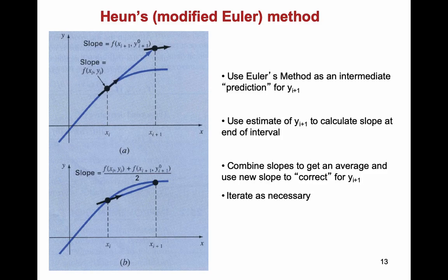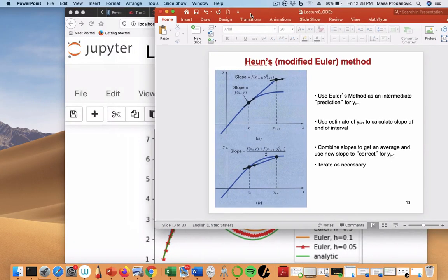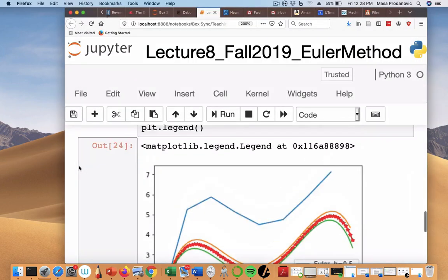So I take this slope, and this slope is a little milder here, this function f of xi plus one and this y that is predicted here by Euler method. I'm just going to take that slope and average the two and see whether that performs better. It's that simple.